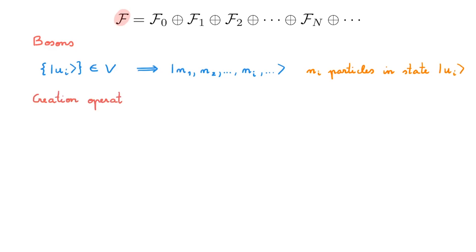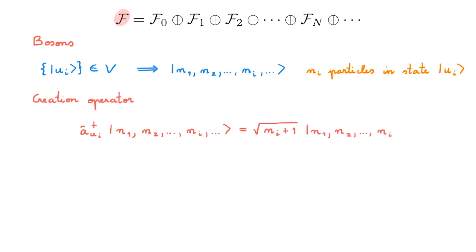The creation operator associated with single particle state UI is aUI-dagger, and it is defined by its action on a Fock state. What this means is that the creation operator adds a particle to the UI state, so that the associated occupation number ni increases by 1. We also have a proportionality constant in the definition, which for now you can take as a given, and we will see later that this choice helps simplify the maths.